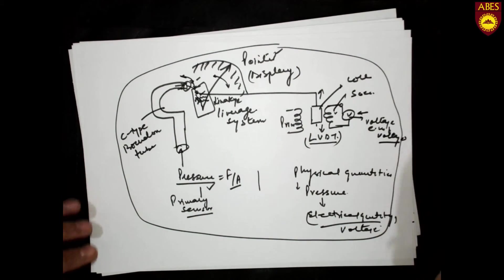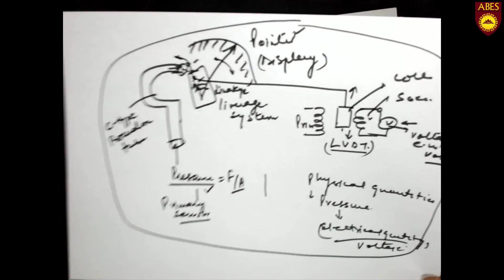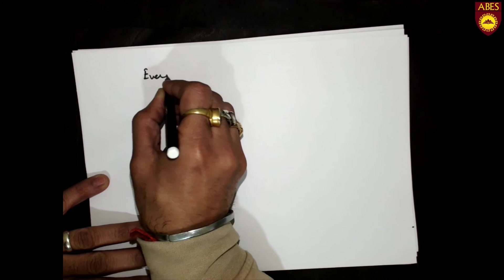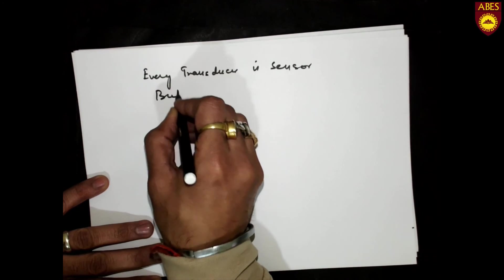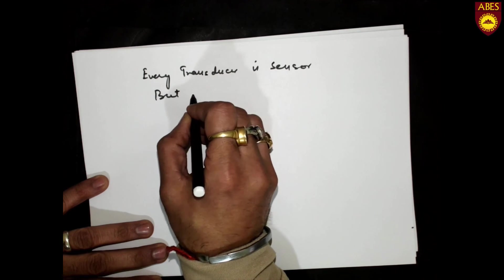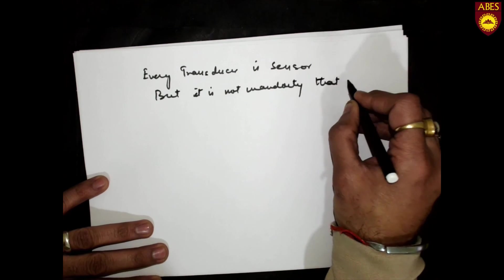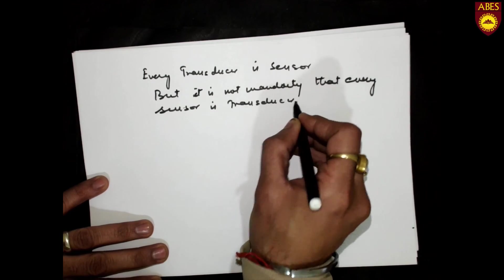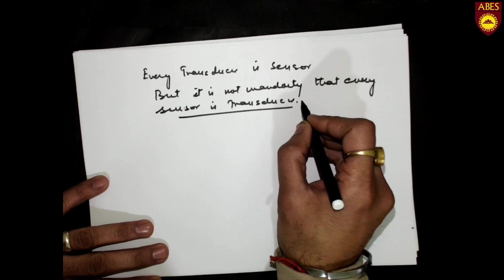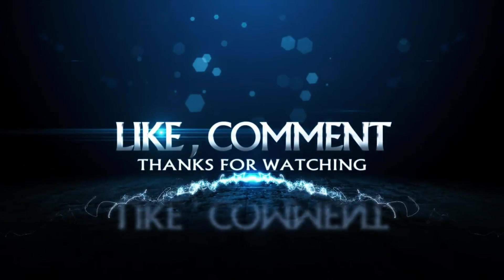Whenever anything is happening in this universe, it is being detected by this block diagram. We must also note that every transducer is a sensor, but it is not mandatory that every sensor is a transducer. In the next lecture or video, I will discuss how this is justified.